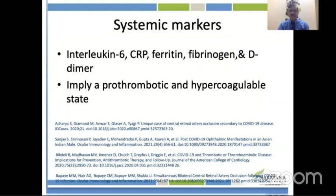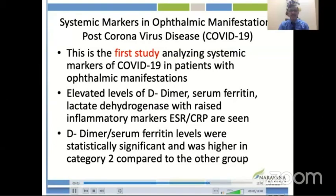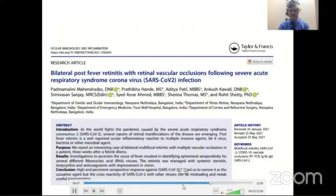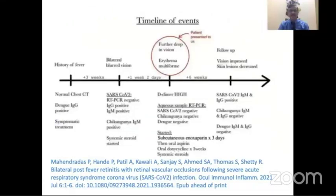Another case involved a patient who developed blurring of vision four days after hospital discharge during the first wave — central retinal artery occlusion in one eye and cotton wool spots in the other eye, with inner retinal swelling, posterior hyper-reflective spots, and cystoid changes. We published on a patient with pan-uveitis with optic neuritis and central retinal artery occlusion. Systemic markers — IL-6, CRP, ferritin, fibrinogen, and D-dimer — can be raised in cases of vascular occlusion, implying a pro-thrombotic state.